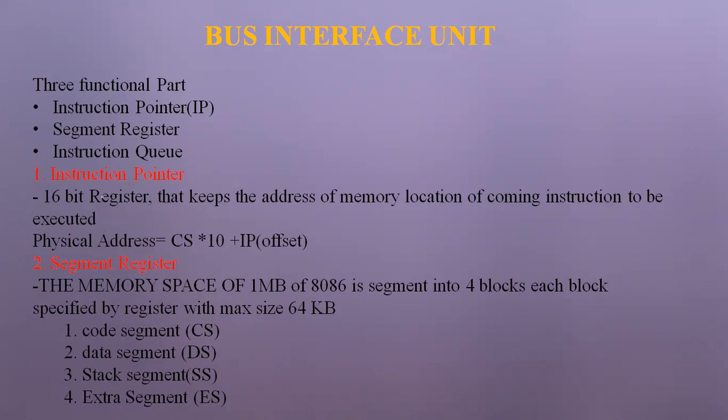The instruction pointer is a 16-bit register that holds the address of the memory location of the next instruction to be executed. When one instruction is executing, the next one is ready. Once execution is completed, the next instruction goes to the execution unit. The physical address is calculated using the formula: Code Segment × 10 + Instruction Pointer (offset address).